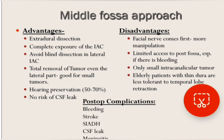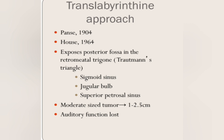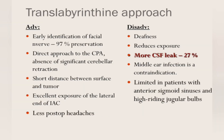The facial nerve comes early in the middle fossa approach, creating more risk of facial palsy due to manipulation. The trans-labyrinthine approach exposes Trautmann's triangle, bounded by the sigmoid sinus, the jugular bulb, and the superior petrosal sinus. Tumours up to 2.5 cm can be dealt with by the trans-labyrinthine approach. The problem is that auditory function is lost — hearing cannot be preserved. However, the biggest advantage is that you identify the facial nerve early and facial nerve preservation is excellent.